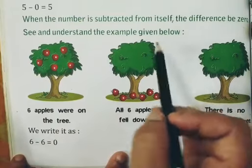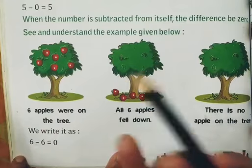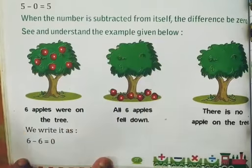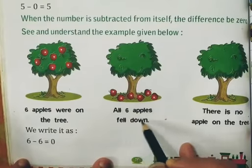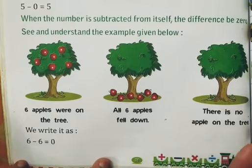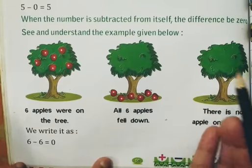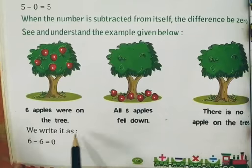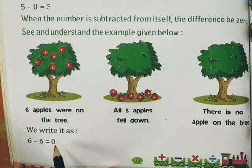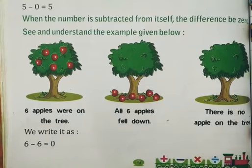There were 6 apples on the tree. All 6 apples fell down. Now there is no apple left on the tree. We write it as 6 minus 6 equals 0.